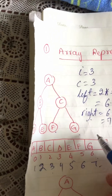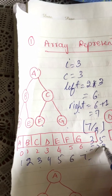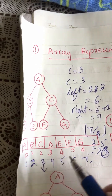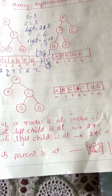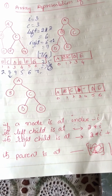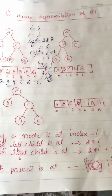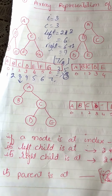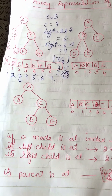If we want to check the parent of G, its index is 7. So 7 divided by 2 gives 3.5, and taking the floor gives 3. So the parent of G is at index 3, which is C. So G's parent is C. To summarize: for a node at index i, left child is at 2i, right child is at 2i+1, and the parent is at floor(i/2). Items are stored by following these formulas.